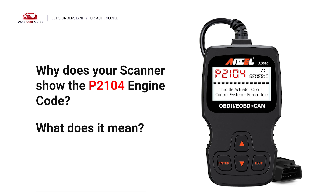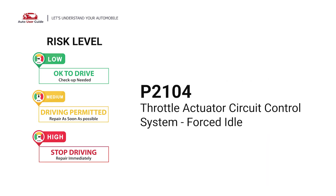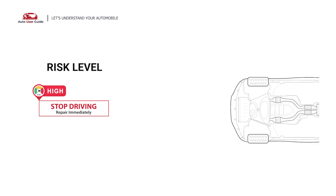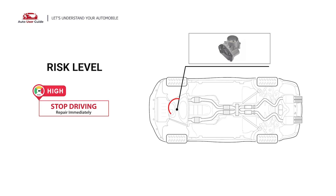Why does your scanner show the P2104 engine code? What does it mean? P2104 is a diagnostic trouble code for throttle actuator circuit control system forced idle. It indicates there is a major failure in the throttle actuator control system, causing the ECM to go into failure mode forced idle and limiting the engine to an idle RPM limit only.